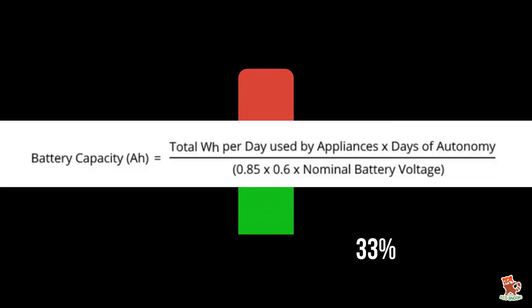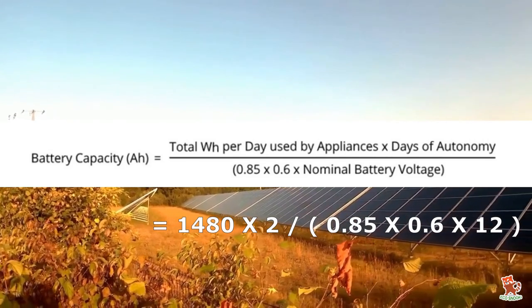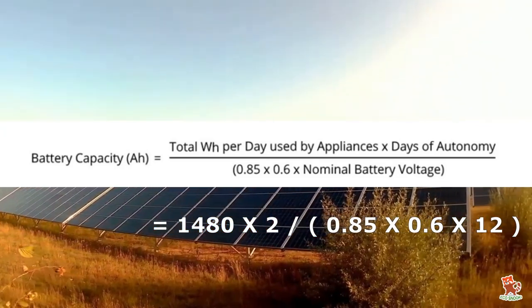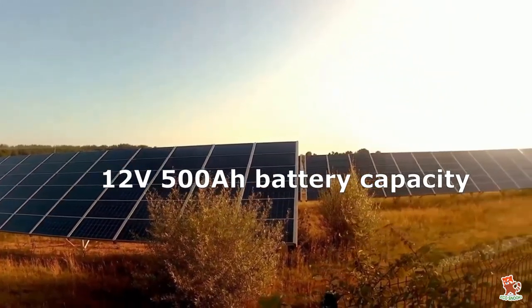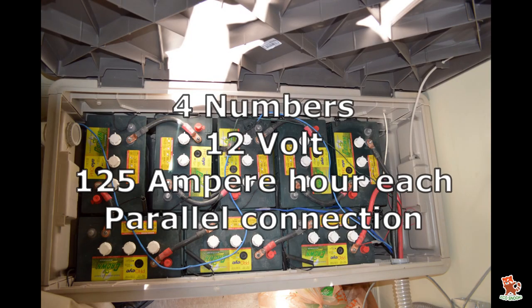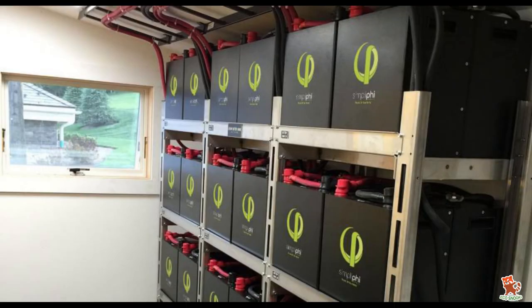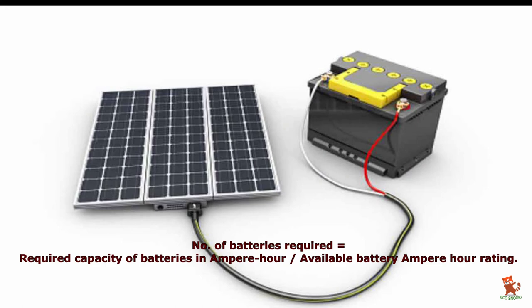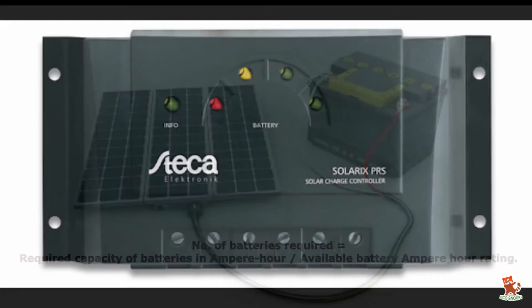Now find the size, rating, and number of batteries. We use the battery capacity formula in ampere-hours. Days of autonomy means the backup days required by the battery — here we consider two days. The nominal voltage of the deep cycle battery equals 12 volts. The required capacity of batteries equals 483.6 ampere-hours. We therefore need a 12-volt, 500 ampere-hour battery capacity for two days of autonomy. We may use four batteries each of 12 volt, 125 ampere-hour connected in parallel. If the available battery capacity is 175 ampere-hour at 12 volts, we may use three batteries. You can get the exact number of batteries by dividing the required capacity by the available battery ampere-hour rating.